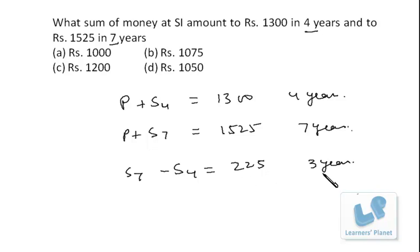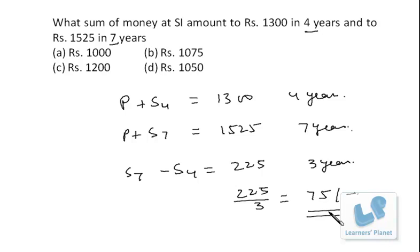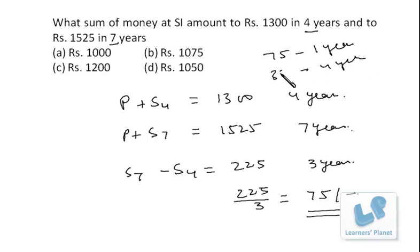Since 225 is the simple interest for three years, and simple interest is the same every year, each year the simple interest is 75 rupees. So in four years the total interest is 300. Since 1300 is the amount after four years and 300 is the interest, the principle was 1000.